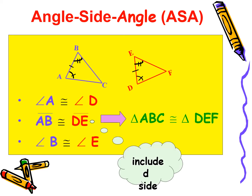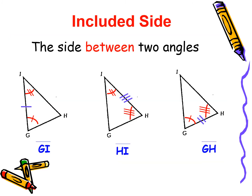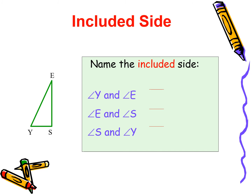Now the concept of included side: the side between two angles is known as the included side. If we choose angles G and I, the included side is GI. In the second figure, if you take angle I and angle H, the included side is HI. In the third figure, if you take angle G and angle H, the included side is GH. Can you name the included side? For angle Y and angle E, it is YE. For angle E and angle S, it is ES. For angle S and angle Y, it is YS.